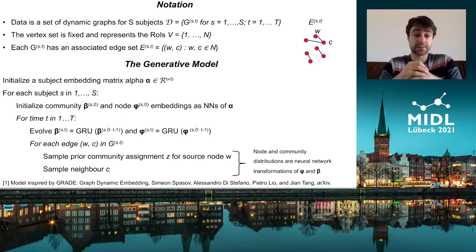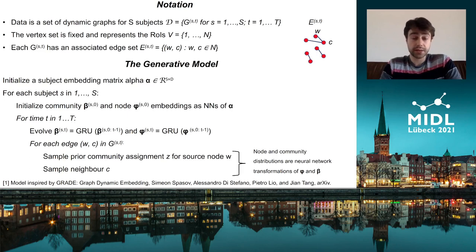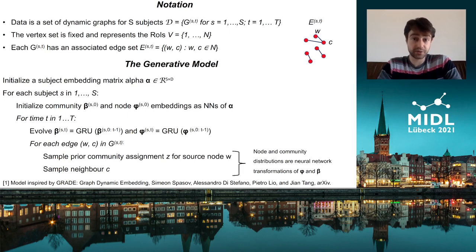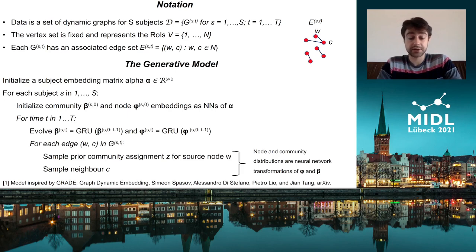The generative model works as follows. First, we initialize some embedding matrix alpha. Then for each subject one to S, we initialize for the zeroth time point the node and community embeddings via some neural network transformation of the respective subject embedding. Then we evolve the node and community embeddings over time with a recurrent neural network — in our case a GRU. For each edge between nodes w and c, we first sample a hidden community assignment z for node w, and then sample the neighbor c from the respective community. We parameterize all necessary parameter distributions with neural networks and train the model by maximizing the log likelihood of the observed data, with further details available in our paper.